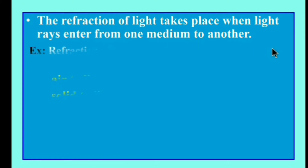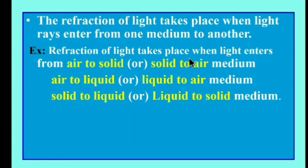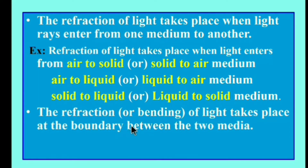Refraction of light takes place when light enters from air to a solid medium, or solid medium to air, or air to liquid, liquid to air, solid to liquid, or liquid to solid. Refraction or bending of light takes place at the boundary between the two media — that is where refraction occurs.